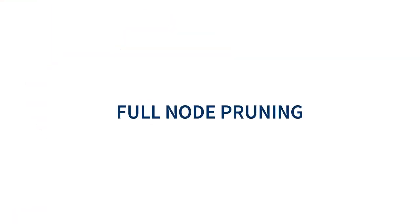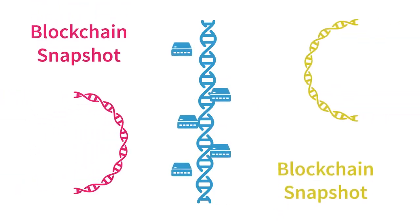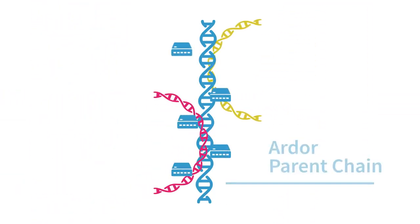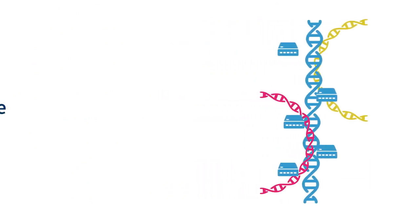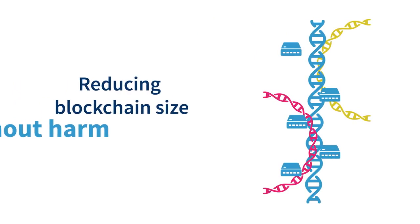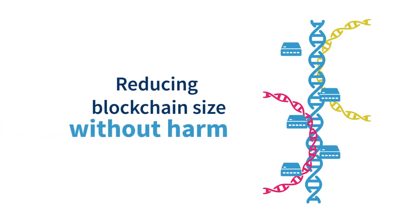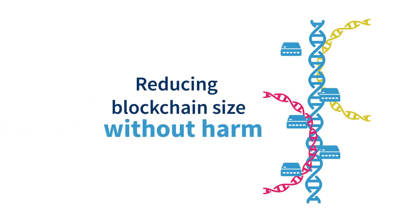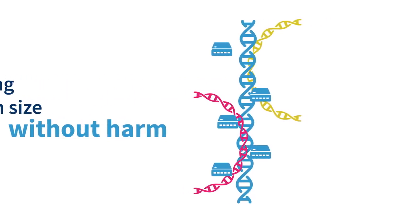Jelurida, the development team behind Ardor, addresses this problem by implementing full node pruning, where transactional data on child chains is regularly removed from the full nodes on the Ardor parent chain after a snapshot is taken of its most recent state, thus reducing the blockchain size without affecting the balances and ongoing transactions on each chain and the security of the whole platform.